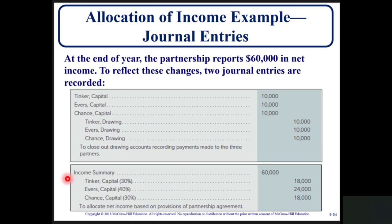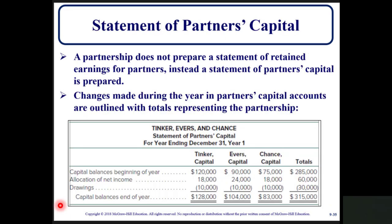For income summary, a debit of $60,000 is recorded, with credits to Tinker for 30% ($18,000), Evers for 40% ($24,000), and Chance for 30% ($18,000), to allocate net income based on the provisions of the partnership agreement. At the end of the fiscal year, two closing entries are required: close the drawing account, then allocate the net income to the partners.